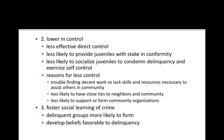These communities may be lower in control — less effective with direct control, less likely to provide juveniles with a stake in conformity, and less likely to condemn bad behavior. Reasons include trouble finding decent work, so residents don't necessarily have the skills and resources needed to assist others in the community. In neighborhoods without residential stability, people are less likely to have close ties to neighbors and communities or to form community organizations.